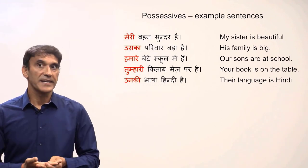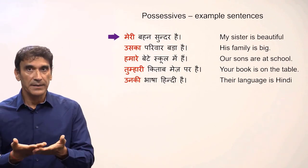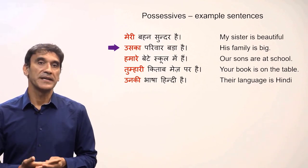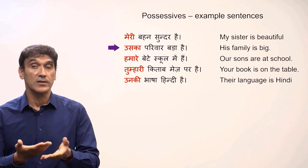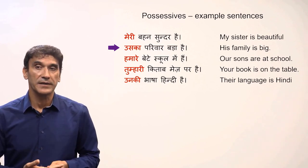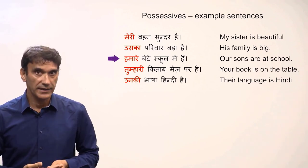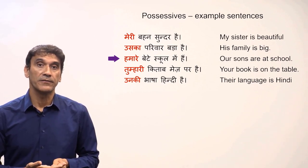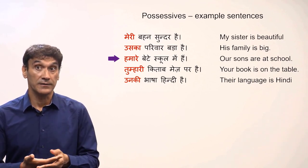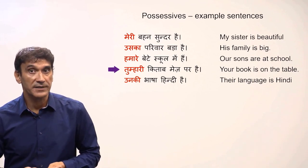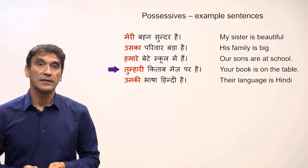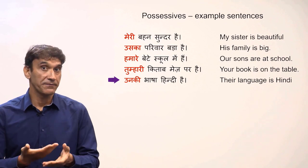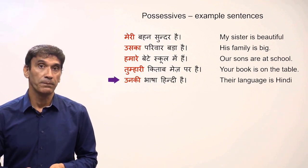Let's look at possessives in example sentences. Meri behen sundar hai — my sister is beautiful. Uska parivaar bada hai — his family is big. Parivaar is a masculine noun, so we use uska. Hamare bete school mein hain — our sons are at school. Bete is masculine plural, so we use hamare. Tumhari kitaab maiz par hai — your book is on the table. Unki bhasha Hindi hai — their language is Hindi. Bhasha is a feminine noun, so we use unki, the feminine form.